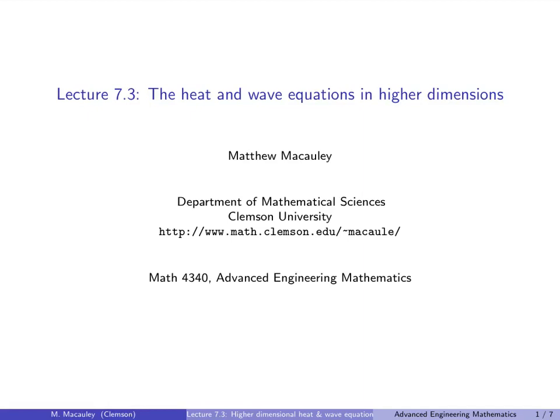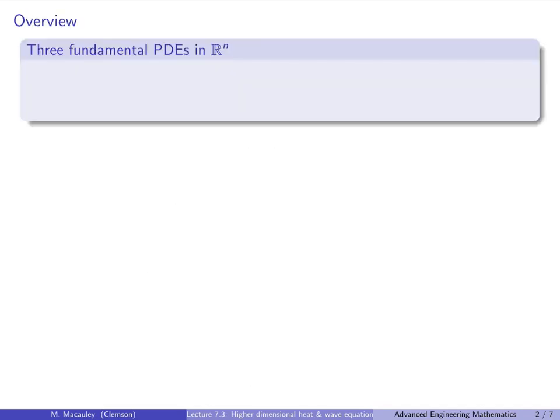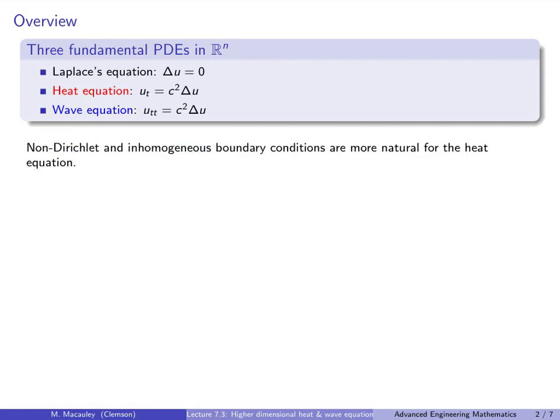Welcome to Lecture 7.3, The Heat and Wave Equations in Higher Dimensions. There are three fundamental PDEs in Rn that we've seen: Laplace's equation, which is Laplacian of u equals zero; the heat equation, which is u_t equals c squared Laplacian u; and the wave equation, which is u_tt equals c squared Laplacian u. In this lecture, we will solve the heat and the wave equation subject to various boundary conditions.